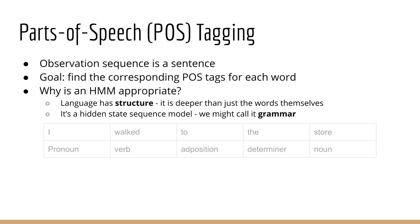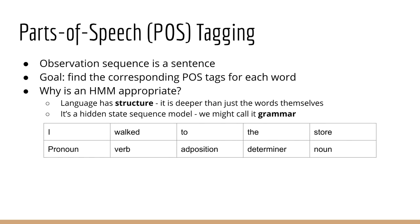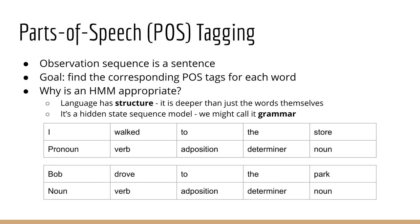For example, you might say: 'I walked to the store.' This sentence has the parts of speech tags: pronoun, verb, preposition, determiner, and noun. Consider another sentence: 'Bob drove to the park.' This sentence has the parts of speech tags: noun, verb, preposition, determiner, noun. So you can see that these two sentences have very similar structure — the parts of speech tags are nearly identical. Our intuition tells us that the English language follows a set of grammatical rules.